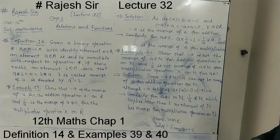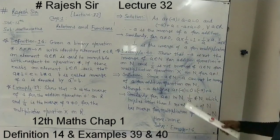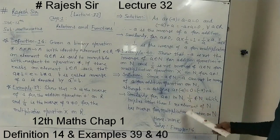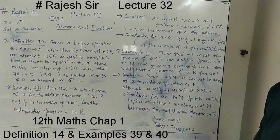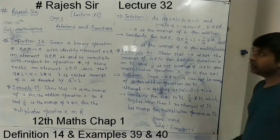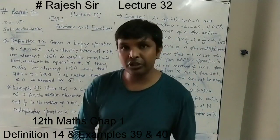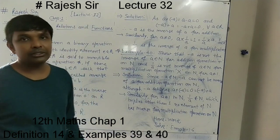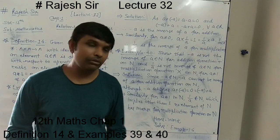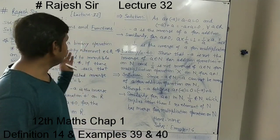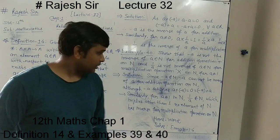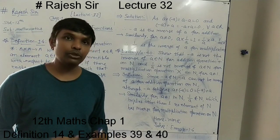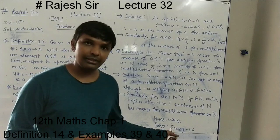This way we have covered Definition 14 and related Examples 39 and 40. You are suggested to complete the homework for Exercise 1.4, as after this you have this exercise and you will be able to solve it. We have seen definitions and examples on binary operations — commutativity, associativity, identity elements, and invertibility. Seeing this video again will help you be confident in solving the exercise. Thank you.